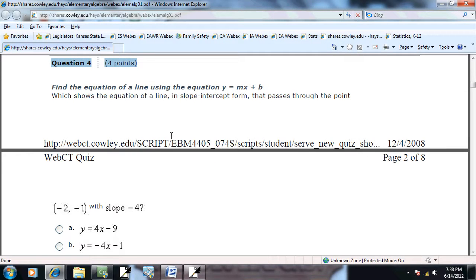Let's take a look at our fourth problem. It says, find the equation of a line using the equation y equals mx plus b, which shows the equation of a line in slope-intercept form that passes through the point negative 2, negative 1.